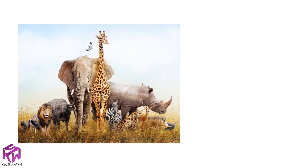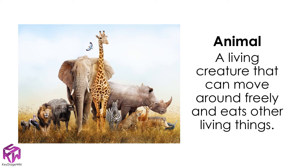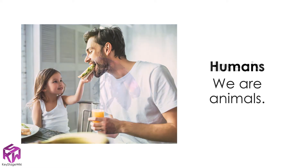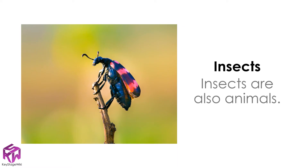Animals are living creatures that can move around freely, and they need to eat other living things to survive. We are animals because we can move around and we need to eat living things to survive. Another example of an animal is an insect — it can move around and it also needs food to survive.